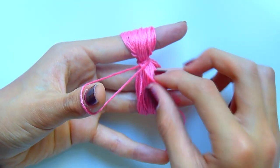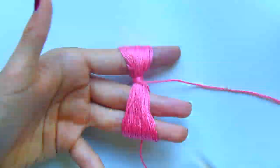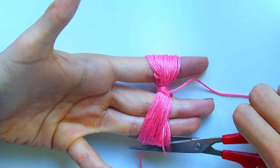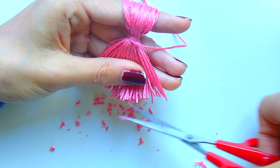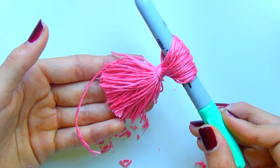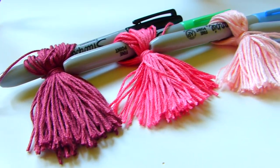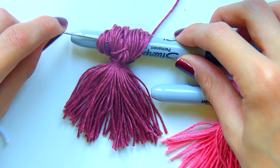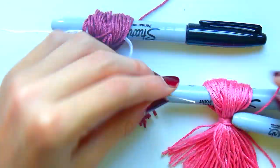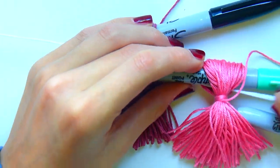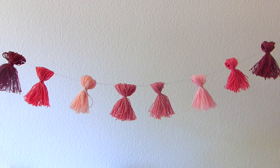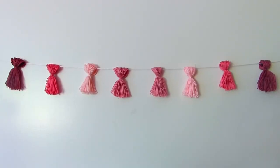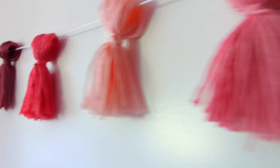C'est pour que votre pompon ne se casse pas, donc il faut bien faire plusieurs tours et plusieurs nœuds. Ensuite avec un ciseau à couture je découpe vers le bas afin que mon pompon soit mis en forme, et je le rectifie un petit peu. Je fais ça pour tous mes pompons. J'ai mis un stylo entre chaque boucle pour garder la boucle et ne pas passer à travers les fils. Avec un fil de coton blanc je viens tendre le fil qui me permettra d'accrocher la guirlande. Et voilà!